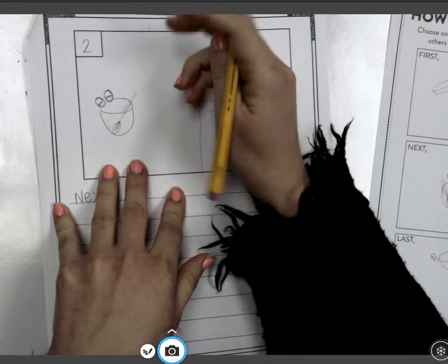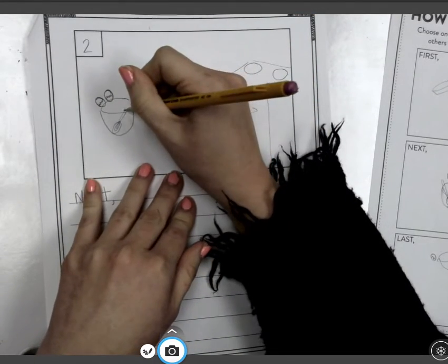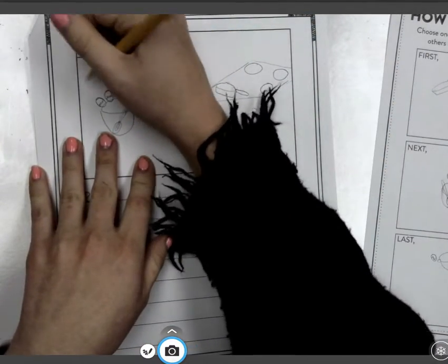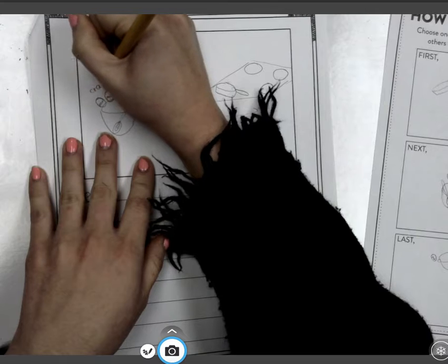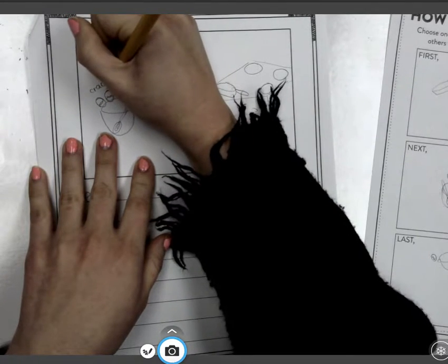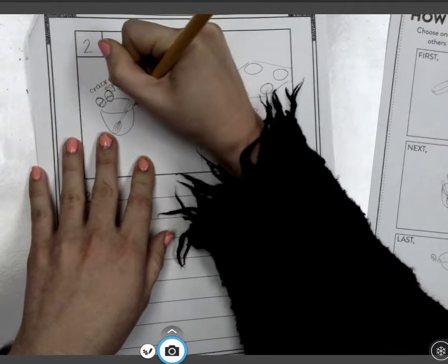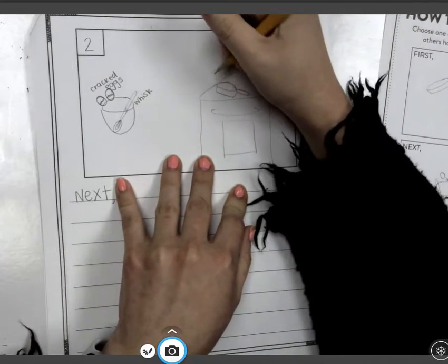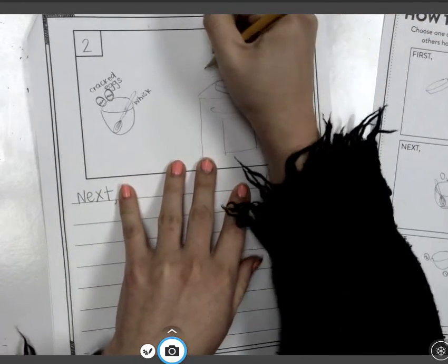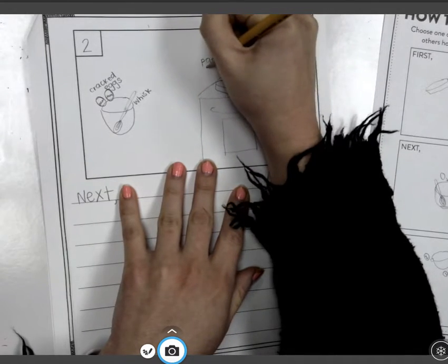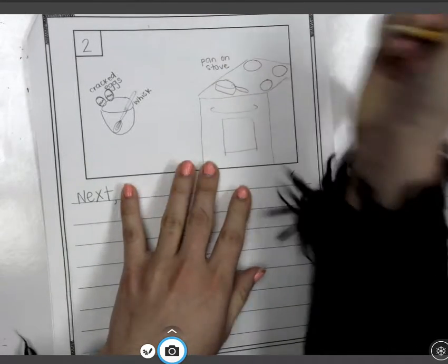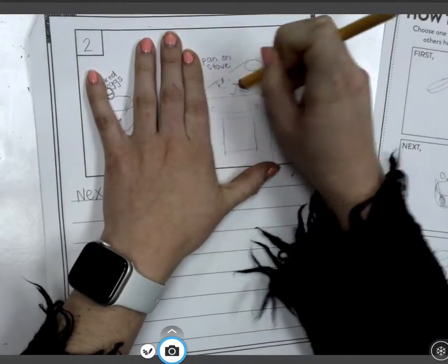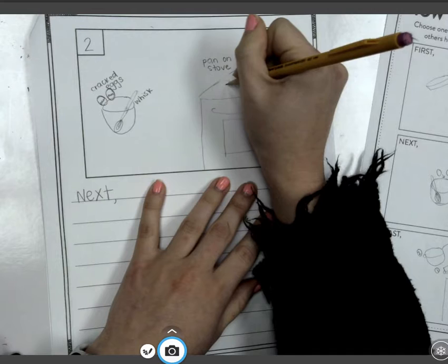So we'll make our whisk have a little bit longer of a handle. So I'm going to have crack eggs and whisk, and then pan on stove. So I still added those labels just to make sure that my reader really knew what they were looking at.